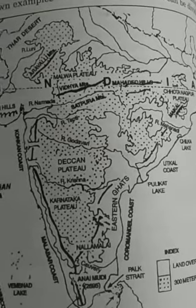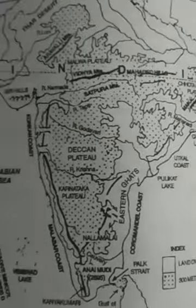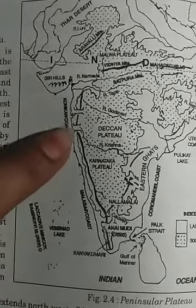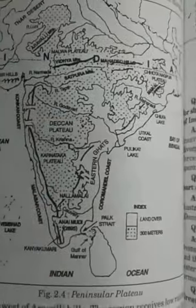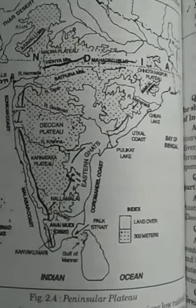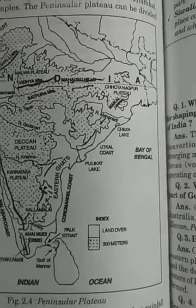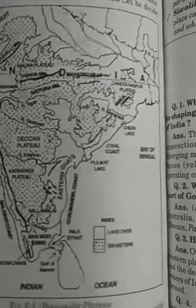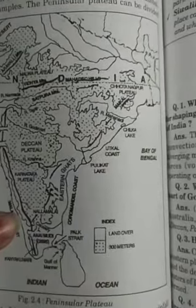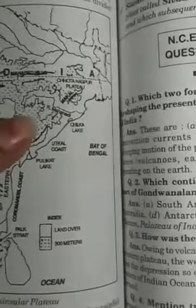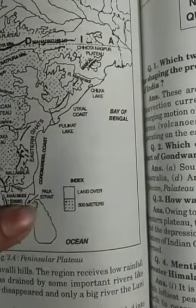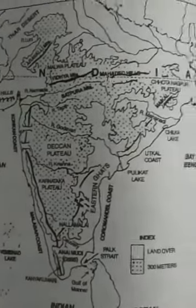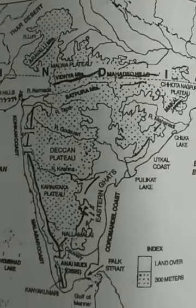The western and eastern coastal plains are situated along the Western Ghats and Eastern Ghats respectively. India has a long coastline of approximately 6,100 kilometers. It can be divided into two parts: the western coastal plain and the eastern coastal plain. The eastern coastal plain is broader and is an example of an emergent coast.